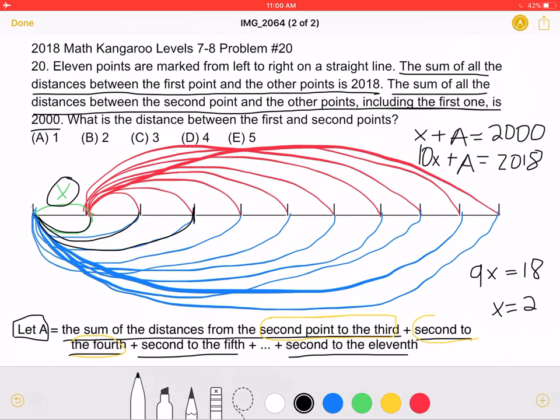The distance between the first and second points is B, 2.